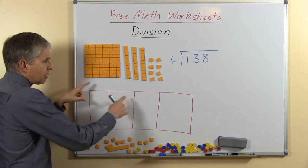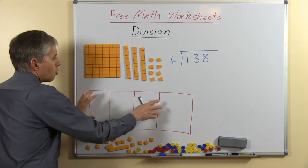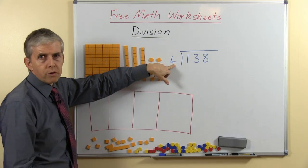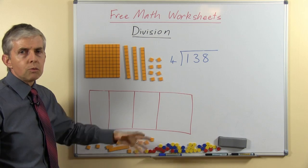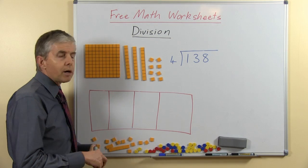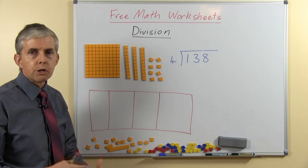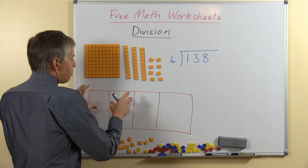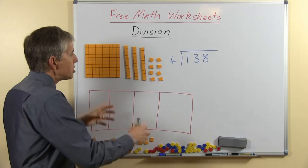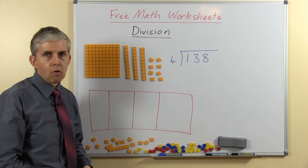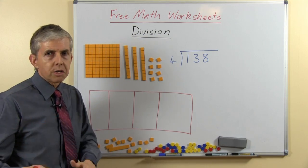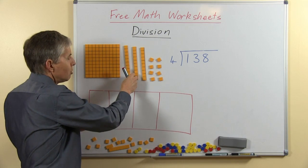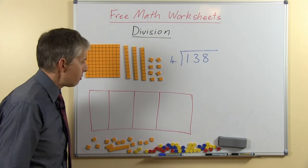Now you'll notice here I've drawn up a frame with four sections, this represents the four that we're dividing by. The model that we're using is division by partition or sharing, so we know there are four parts to the answer, we just don't know how many go in the four parts. This is the way to do it with the base ten material.